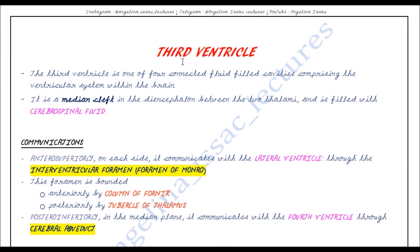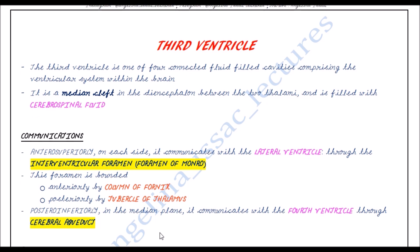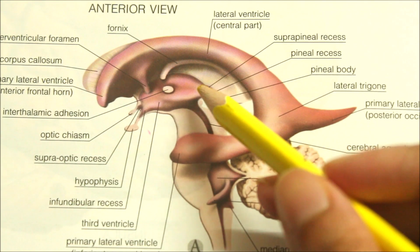To summarize the introduction: the third ventricle is one of four connected fluid-filled cavities in the ventricular system, a median cleft in the diencephalon between the two thalami filled with cerebrospinal fluid. Antero-superiorly it communicates with the lateral ventricle through the interventricular foramen — the foramen of Monro — bounded anteriorly by the column of fornix and posteriorly by the tubercle of thalamus. Postero-inferiorly it communicates with the fourth ventricle through the cerebral aqueduct.